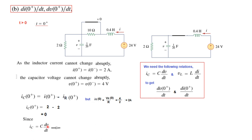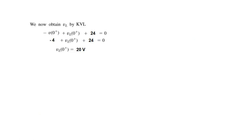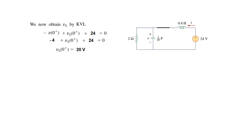Since ic = C·dv/dt and ic(0+) = 0, we get dv/dt at t=0+ = 0 volts per second. For di/dt, writing KVL around the loop: −v(0+) + vL + 24 = 0, giving vL = 20 volts. Therefore di/dt at t=0+ = vL/L = 20/0.4 = 50 amperes per second. The answers for the second part are 50 amperes per second and 0 volts per second.